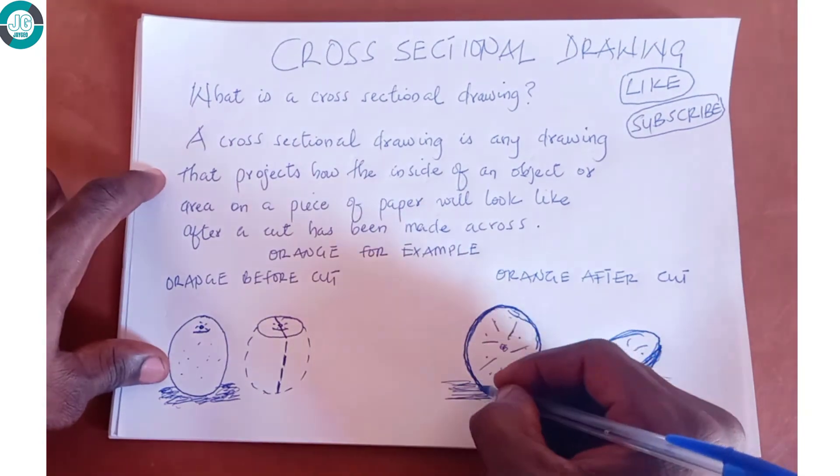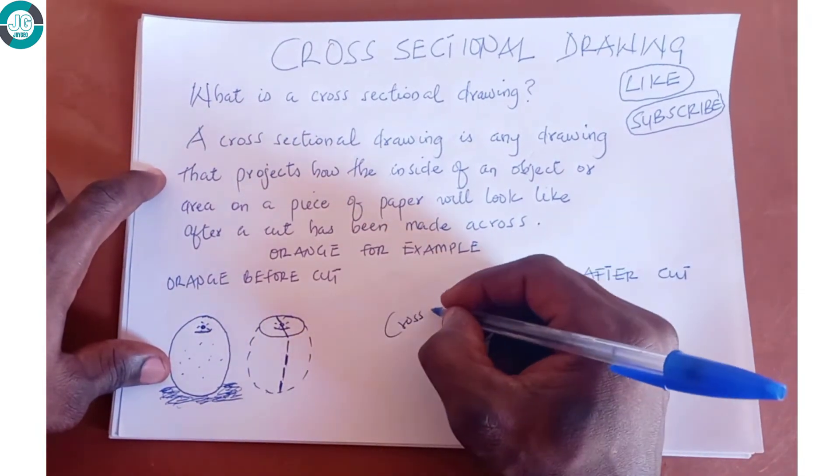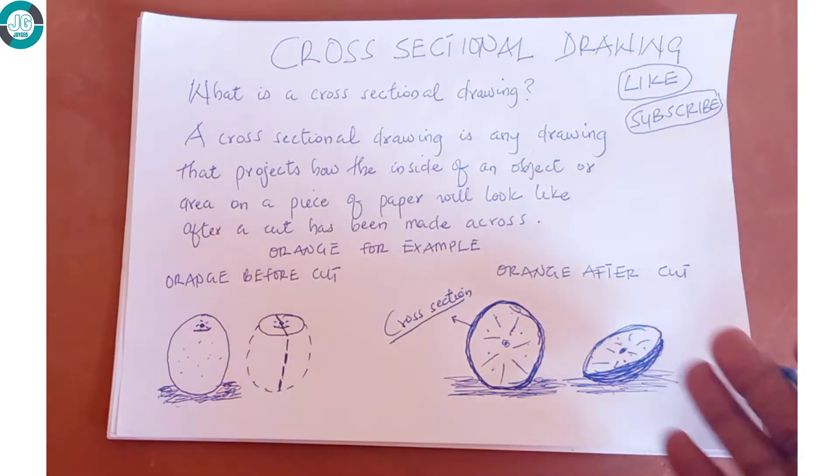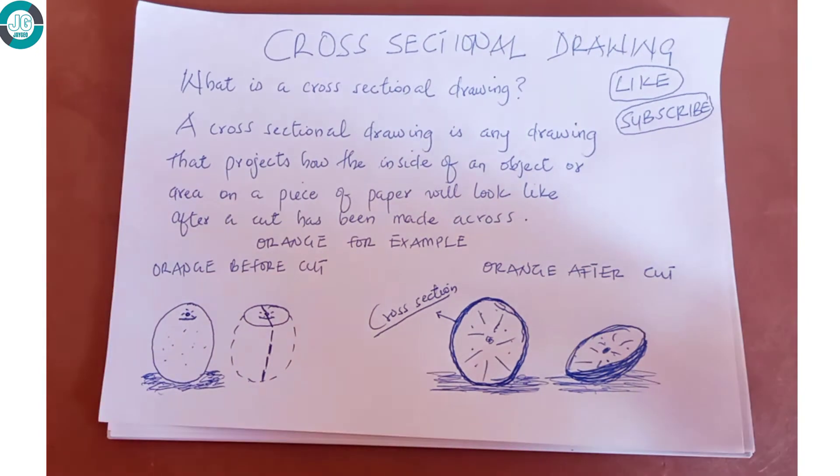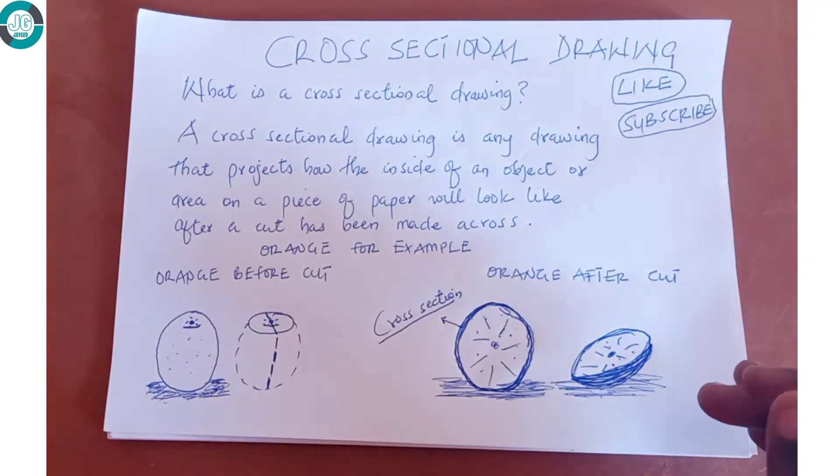The drawing right here is the cross-section of the orange. It is a cross-section because the drawing reveals to us how the inside of the orange looks like after we used our knife to cut through it. So that is the cross-section of the orange.